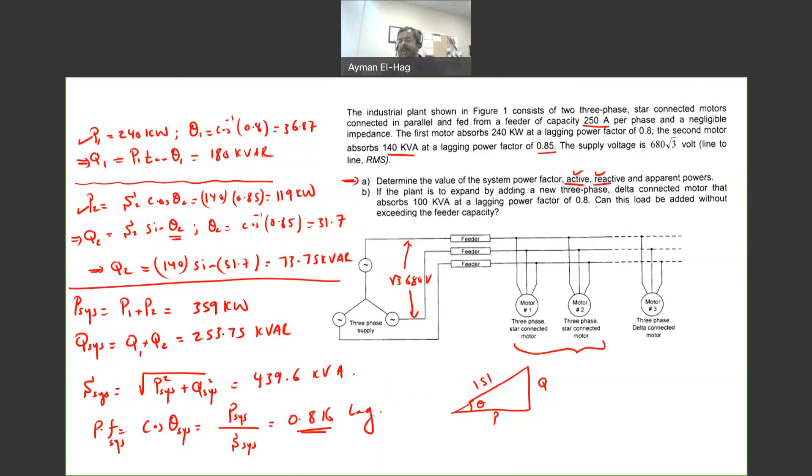Okay, so that's very similar to the previous questions. Now in Part B it says, if the plan to expand. Now we want to expand and include a third motor connected in delta. And this motor absorbs 100 kVA at a lagging power factor of 0.8.